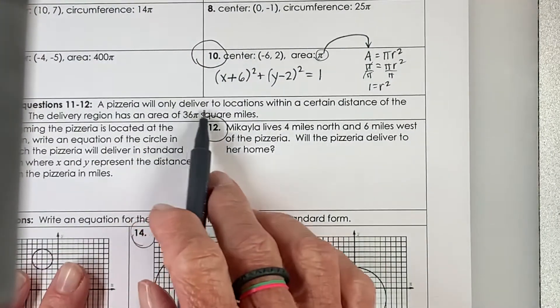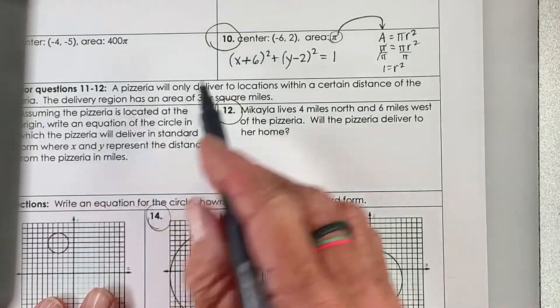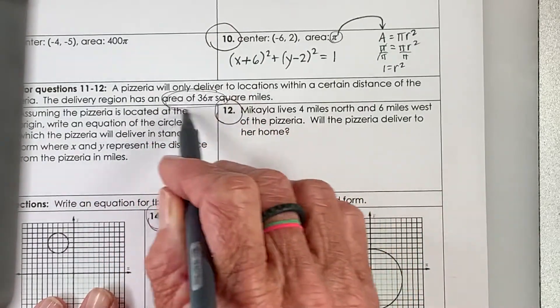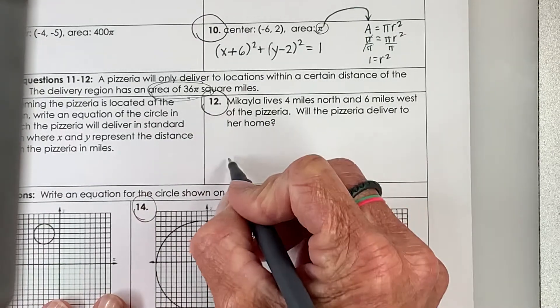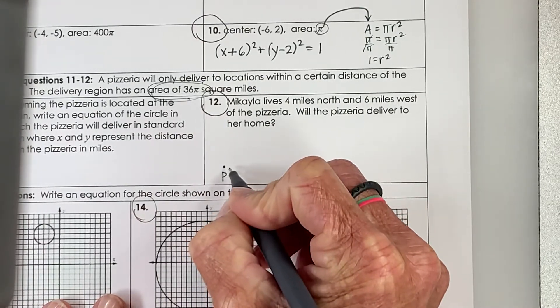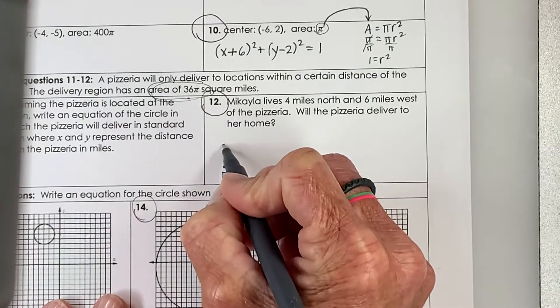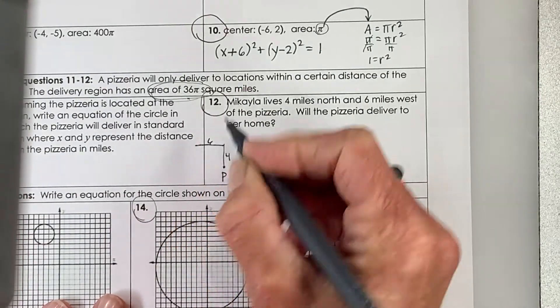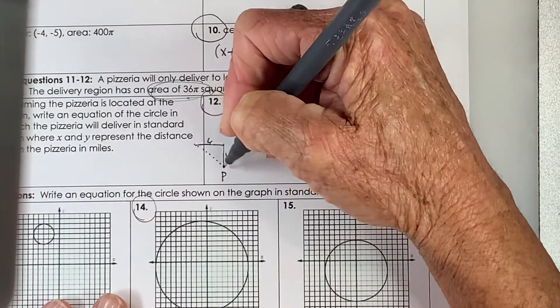All right, a pizzeria is only going to deliver to locations within a certain distance of the pizzeria. The region has an area of 36 pi square miles. So here's the pizzeria. Mikayla lives 4 miles north and 6 miles west. Will the pizzeria deliver to her house?